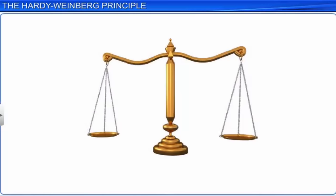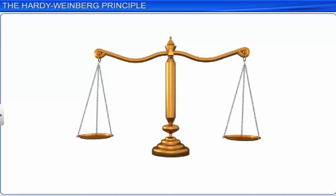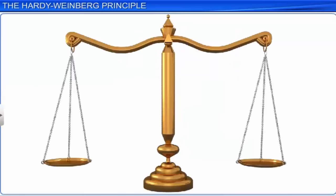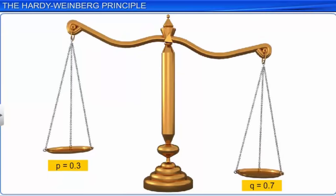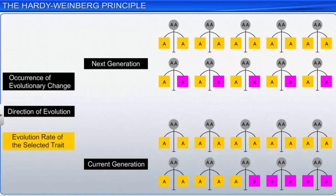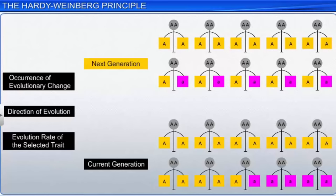When the frequency measured differs from expected values, the difference indicates the extent of evolutionary change in a population. For example, generally the frequency of P or Q is 0.5. If it changes to either less than or more than 0.5, it would indicate evolutionary change. We can learn about the occurrence of evolutionary change, the direction of evolution, and the evolution rate of the selected trait by comparing the genotype frequencies of the next generation with those of the current generation. Genetic equilibrium serves as a baseline against which we can measure genetic change.